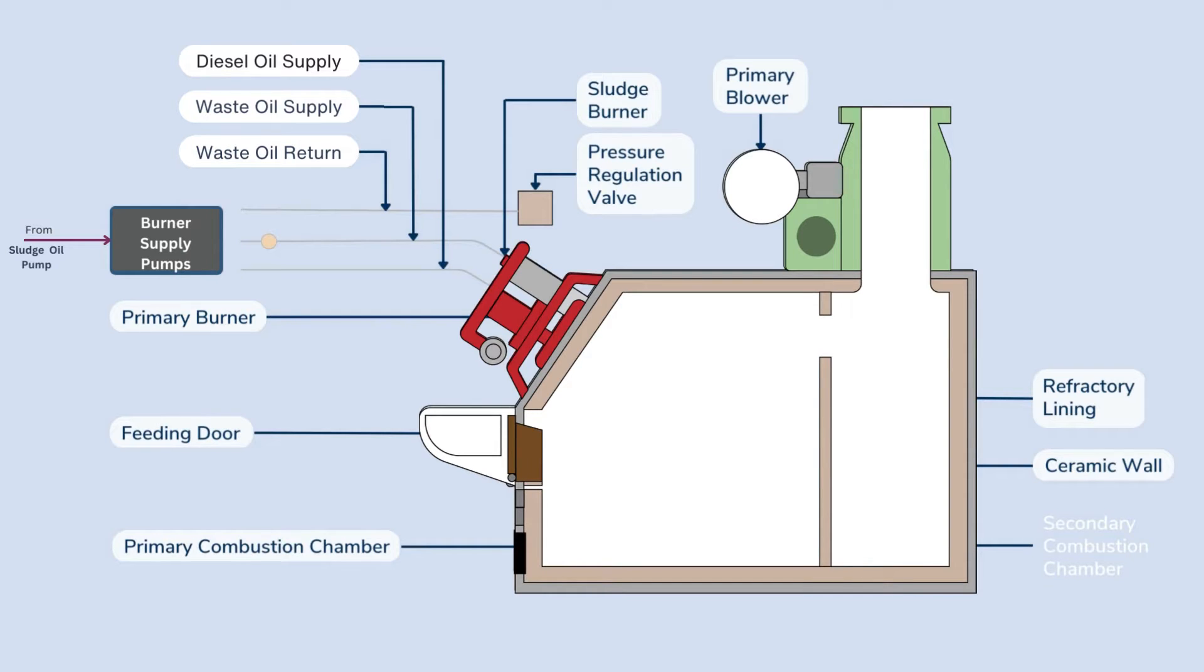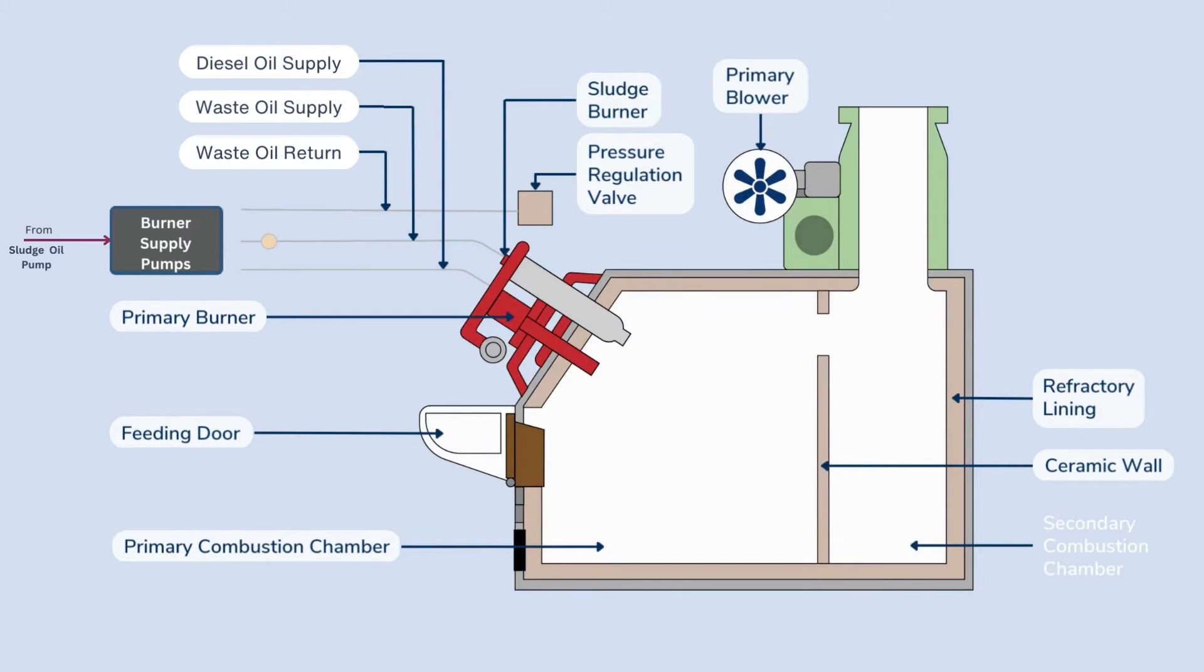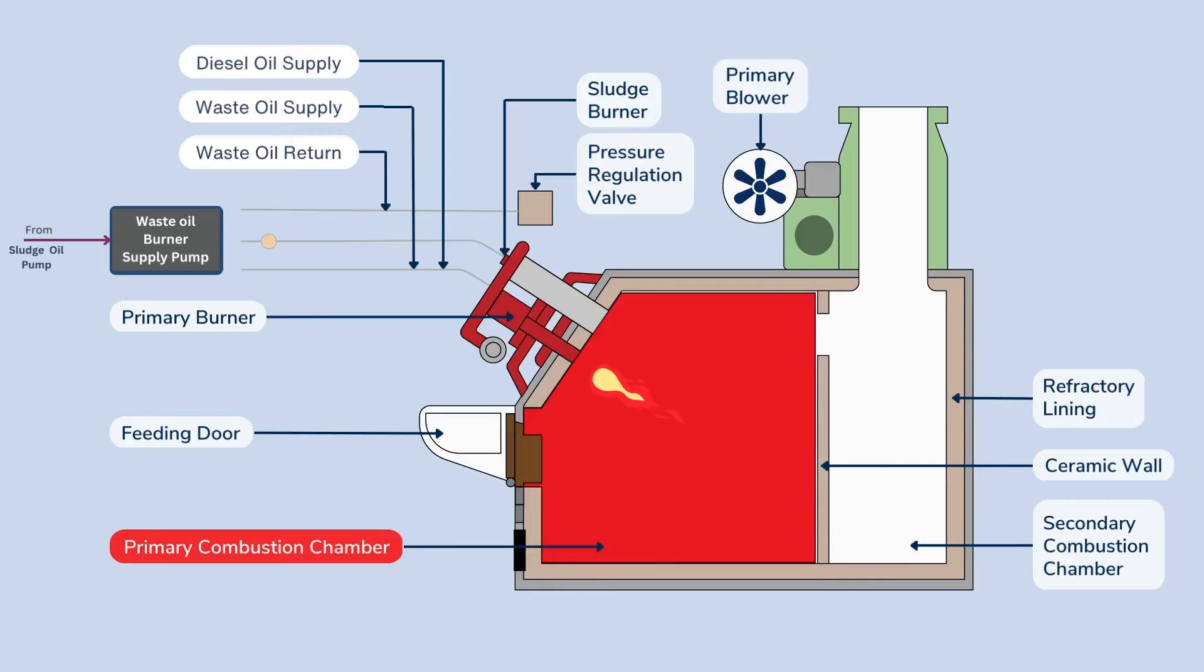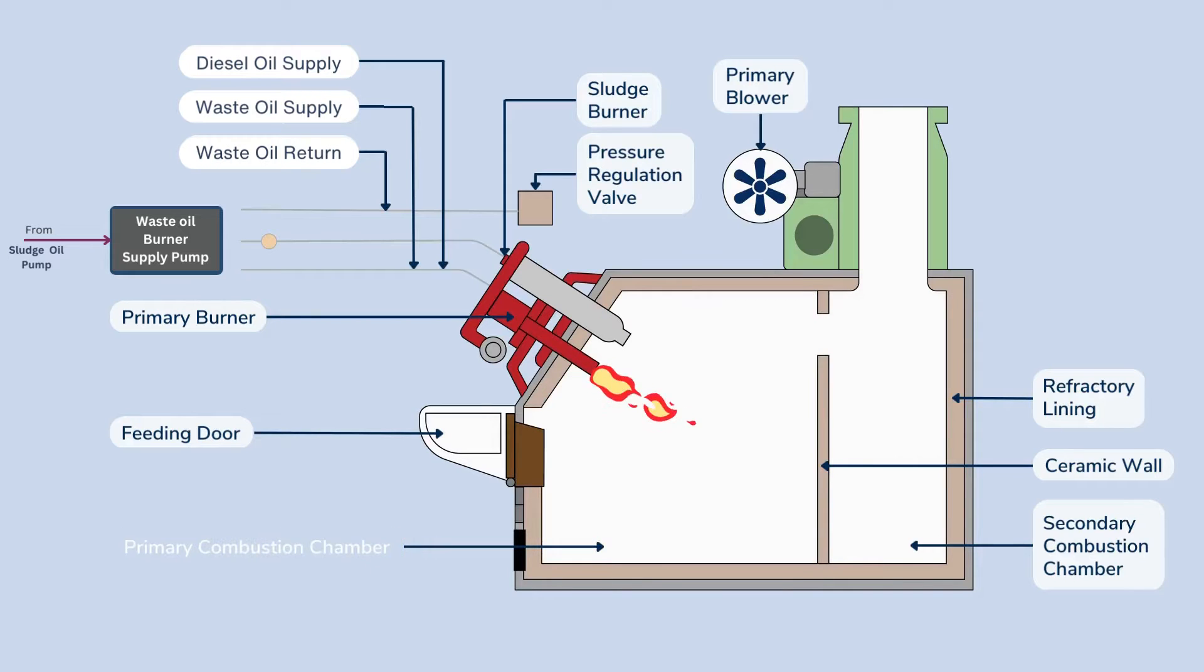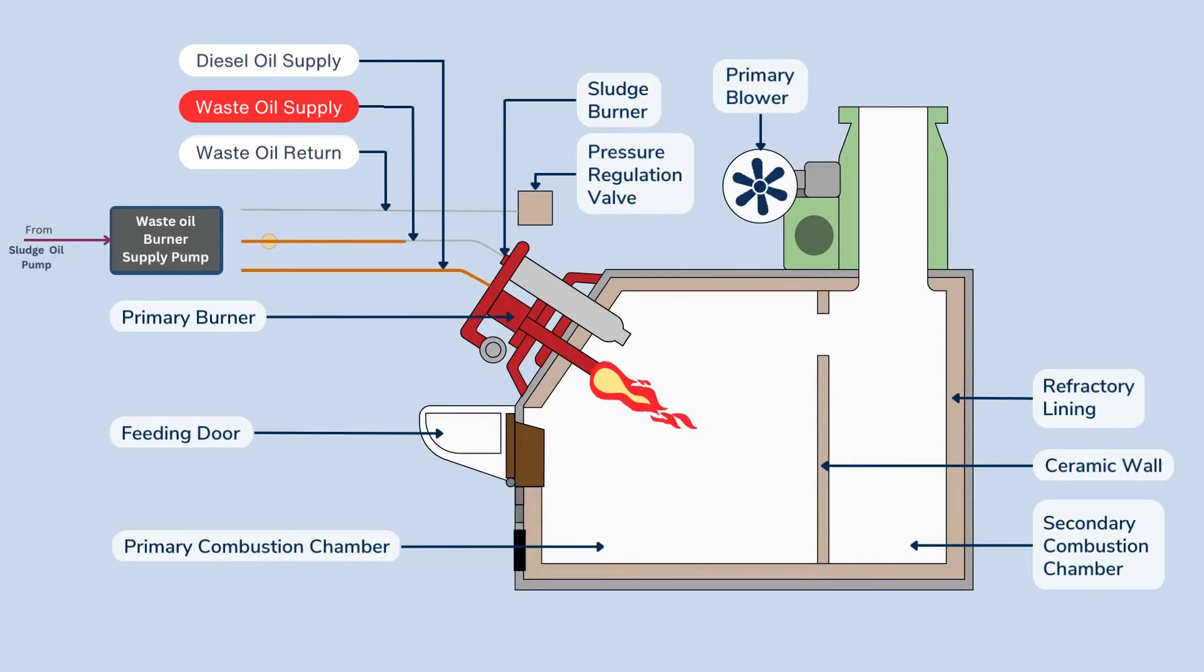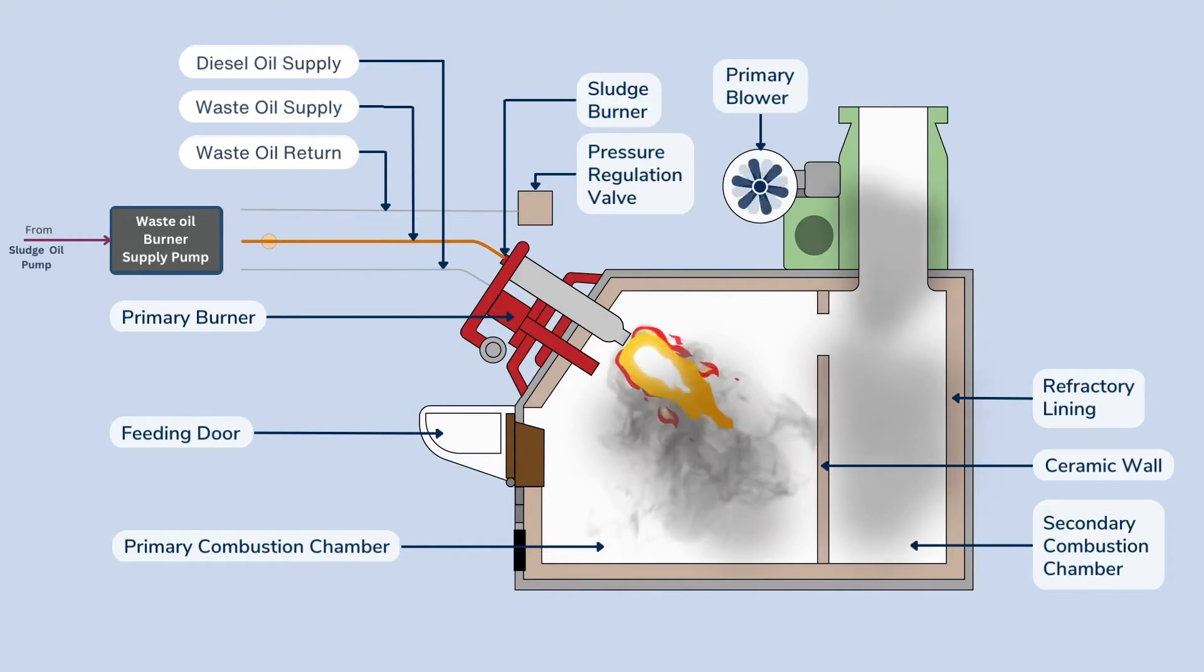Before burning the oil, the primary burner of the incinerator is started to ensure that the primary chamber is heated. A forced draft fan is provided to supply oxygen for combustion inside the primary chamber. Once the desired temperature is reached, the waste oil burner supplies the oil inside the incinerator.